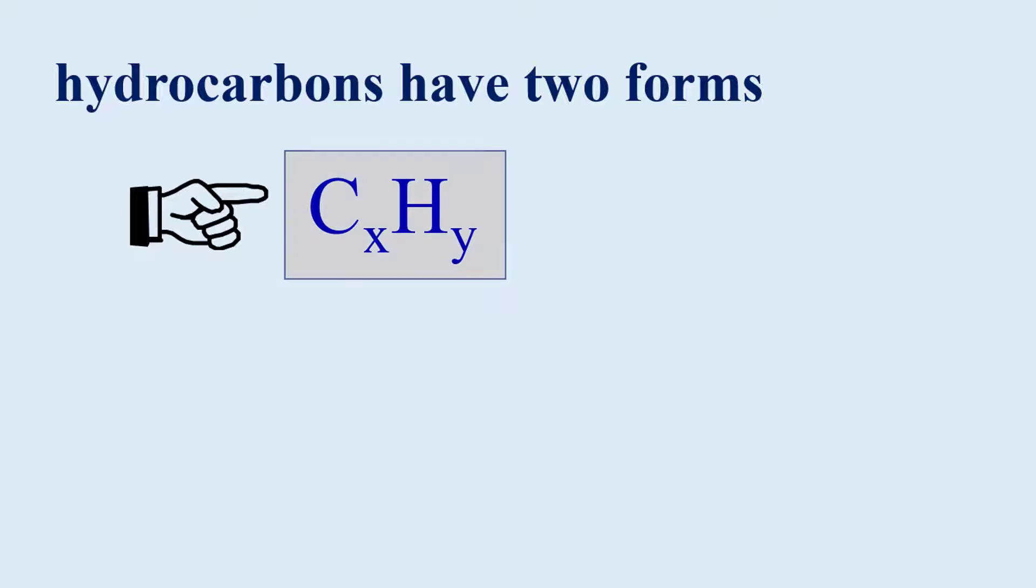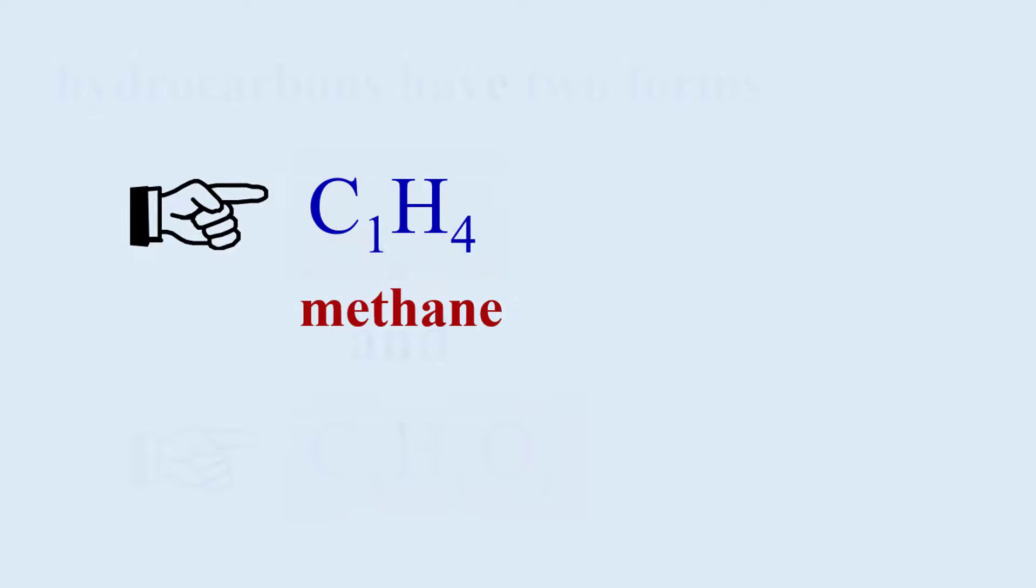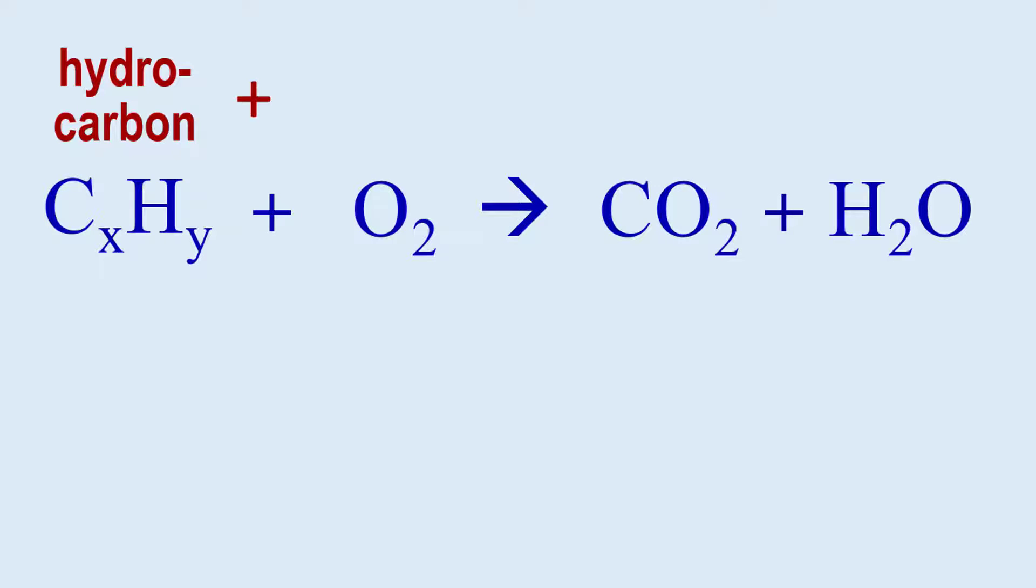The first one we see here as CXHY, the other is CXHYOZ with the X, Y, and Z representing a huge range of subscripts. For example, CH4 is methane or we could have ethane, propane, octane, and waxes have in the vicinity of 24 carbons and there are many more. If any of them react with oxygen then the products are carbon dioxide and water.